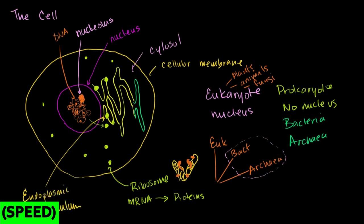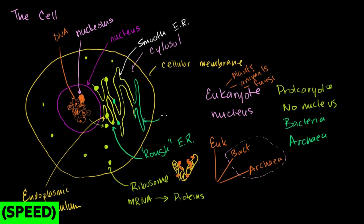Following the membranes, we eventually get to the Golgi bodies. In free ribosomes, mRNA gets translated into proteins that then just float around in the cytosol. But if we want proteins that should end up in membranes or outside of the cell, that's where the endoplasmic reticulum and the Golgi bodies come into play. mRNA coming out of the nucleus can attach to the ribosomes on the rough ER and be translated there.